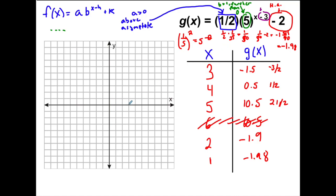So, let's graph it here. We've got three, negative one and a half, four, positive a half, five, ten and a half. Remember, one, two, three, four, five, six, seven, eight, nine, ten and a half.